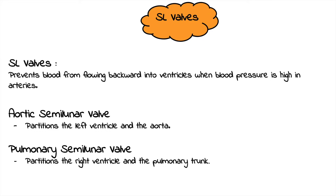From the lungs, blood goes through the pulmonary veins and back to the heart. Both the pulmonary trunk and the aorta are arteries. Remember, arteries carry blood away from the heart — both the aorta and the pulmonary trunk take blood away from the heart.